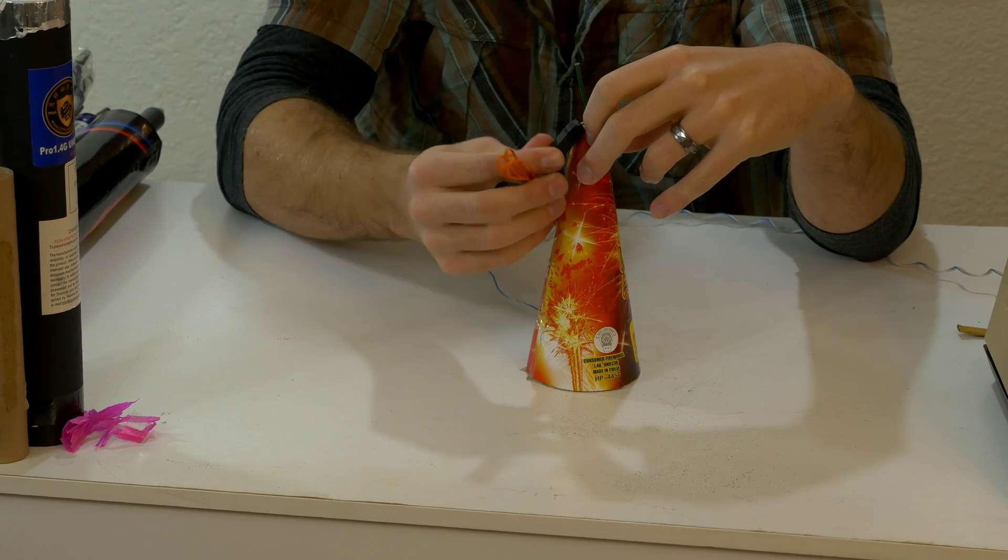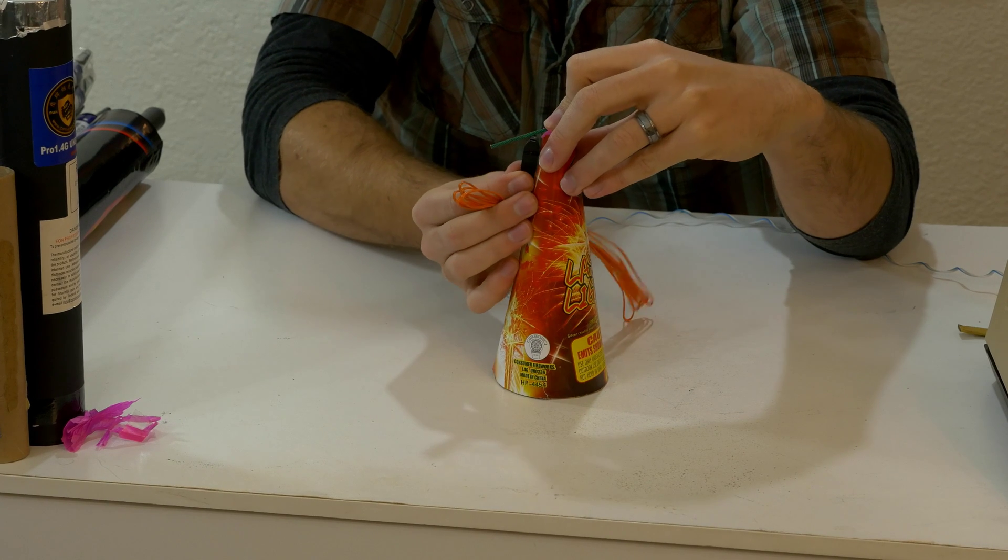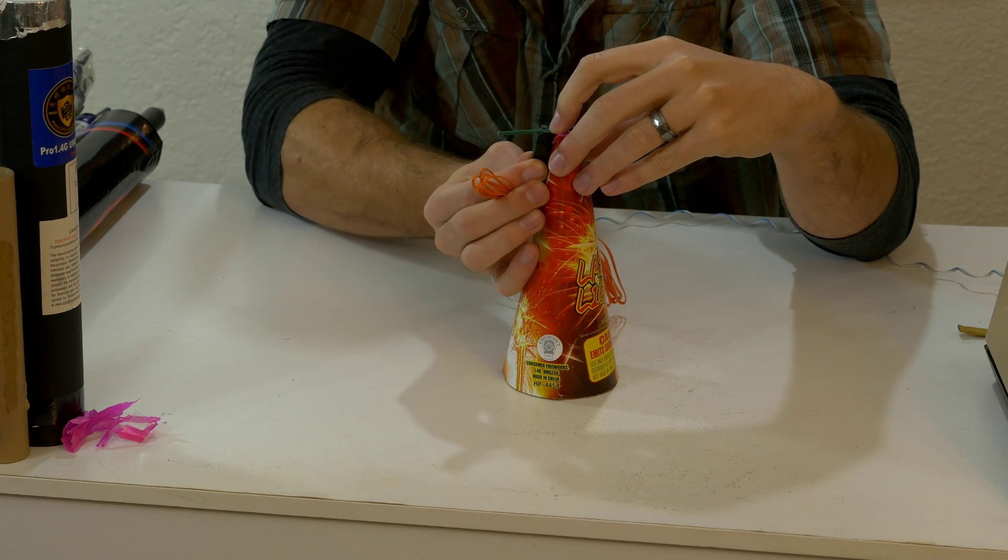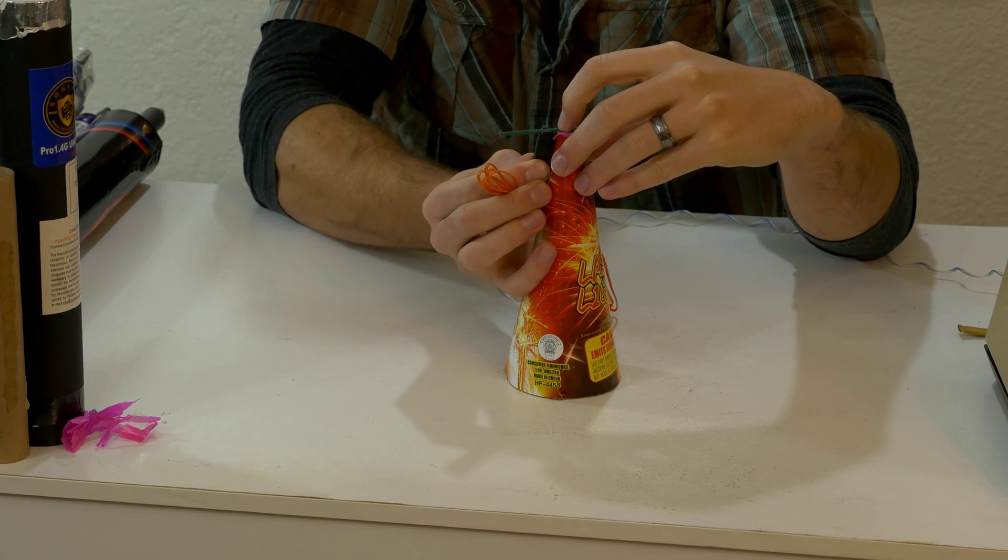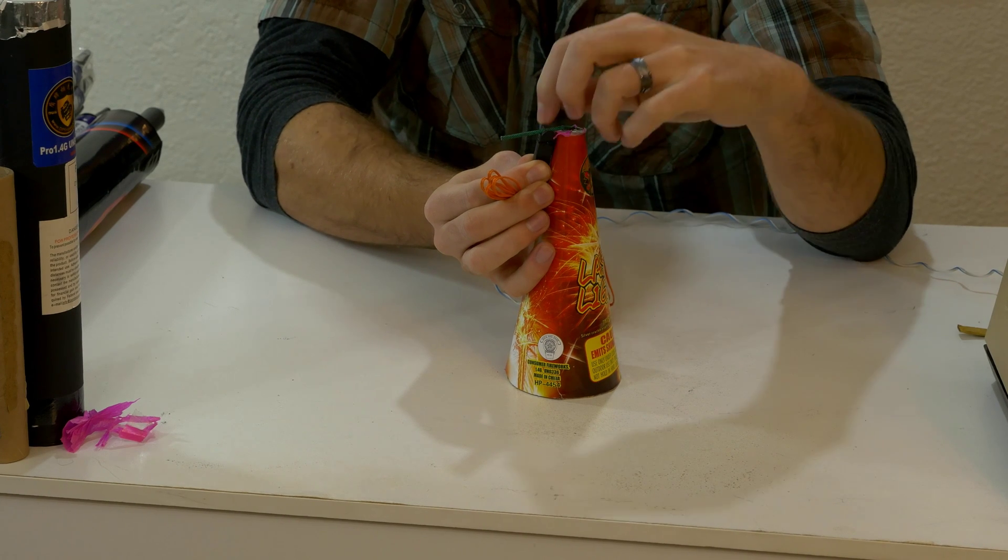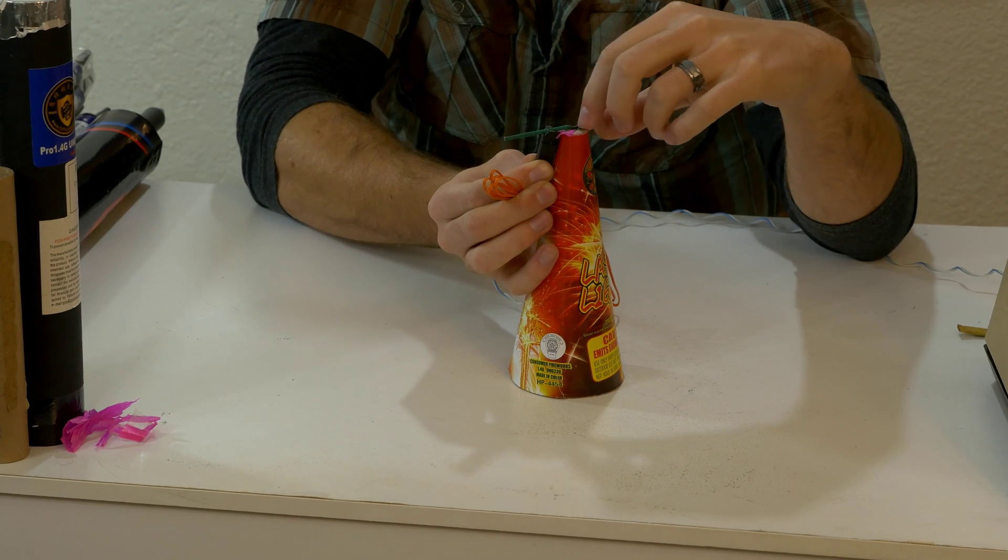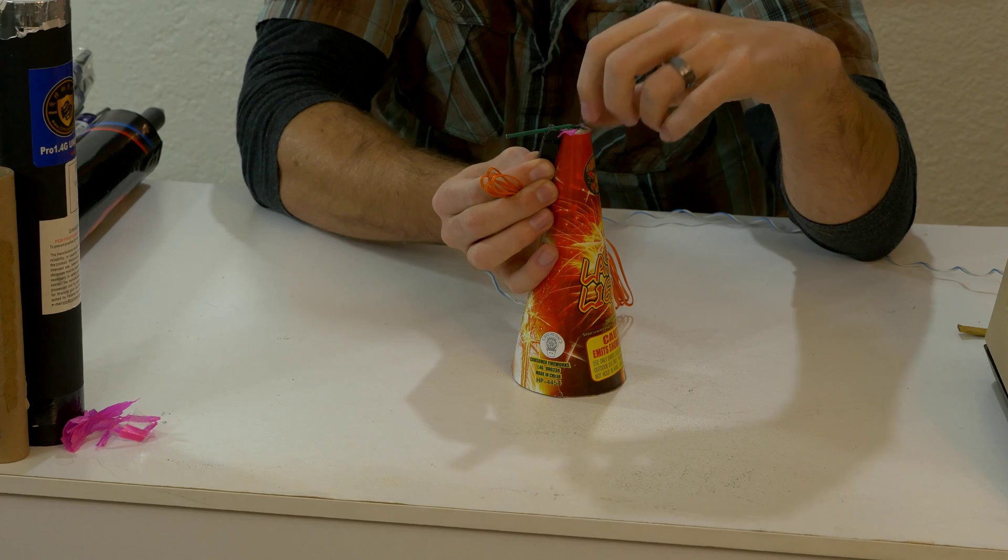If you're concerned about it maybe blocking the nozzle, you could come over here and do it right on the side. That would work as well. That may be a little bit better. It would add a little bit of time. You could replace this green visco with fast visco as well.